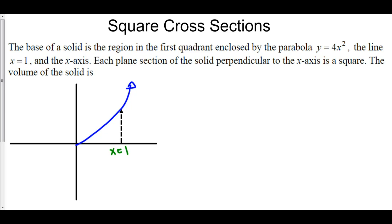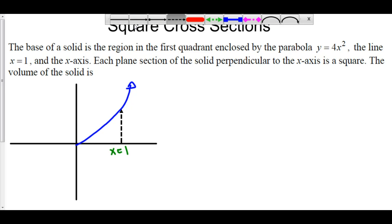We need to find the volume of the solid. Here is quadrant 1, and here is one half of y equals 4x squared because we're only looking in quadrant 1. Let's make x equals 1 somewhere around here. We're looking at this region that's almost triangle-like but quadratic on the side, and we're going to create square cross-sections that are perpendicular to the x-axis.